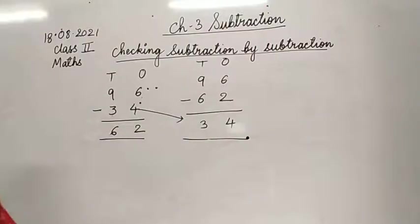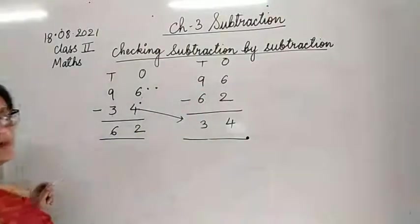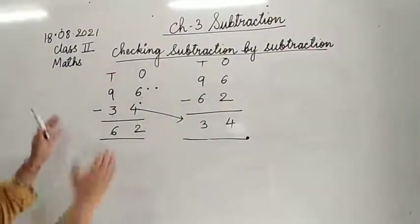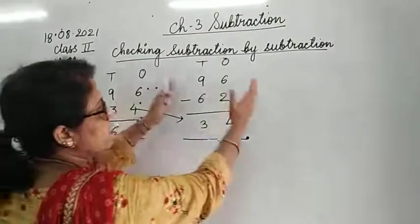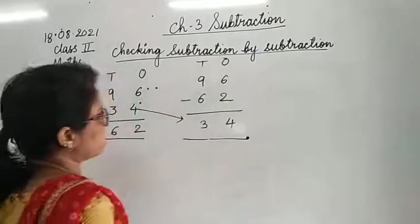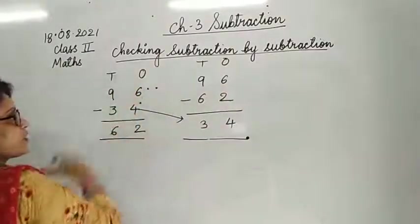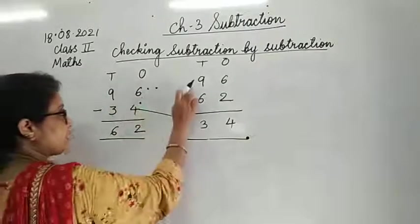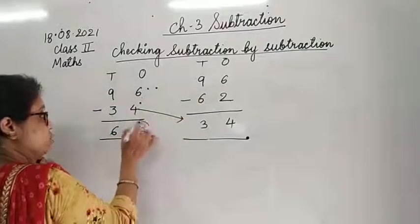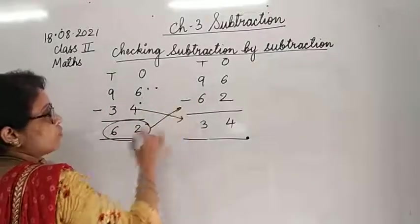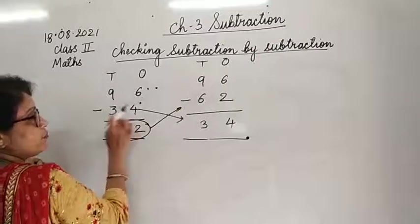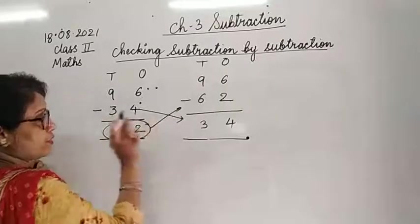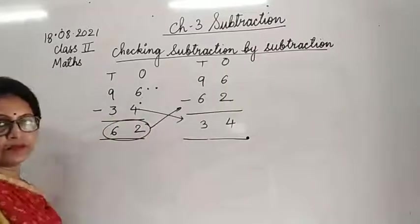So to check subtraction by subtraction: the original number stays on top. Then we subtract the answer we got, and we should get back the number that was originally subtracted. That is how we verify our subtraction is correct.